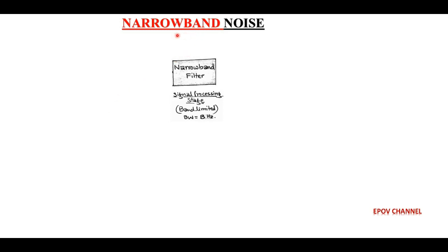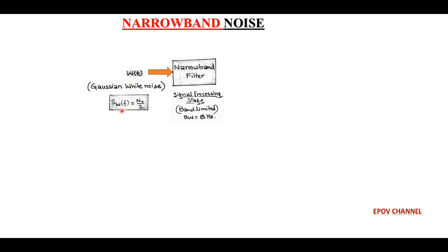Our next topic is narrowband noise. Narrowband noise is the same as low pass filtered white noise. Here at the receiver side, the ideal low pass filter is considered as a narrowband filter with input as Gaussian white noise denoted by W(t). The power spectral density of Gaussian white noise is N0/2, denoted by S(f), as shown in the figure.